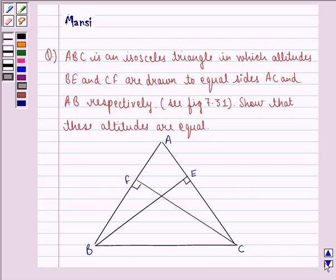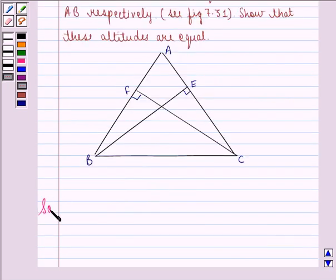Let us start with the solution to this question. We first consider the two triangles, that is triangle AFC and triangle ABE. So we see that in triangle ABE and triangle AFC,